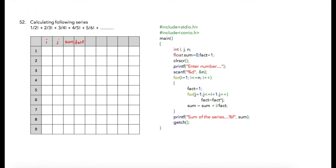In the next program we are required to print the output of this series. Suppose the user has entered five, then we are required to calculate the series to level five. So in case of five we need to calculate five places. Before writing this logic let us break down this series.